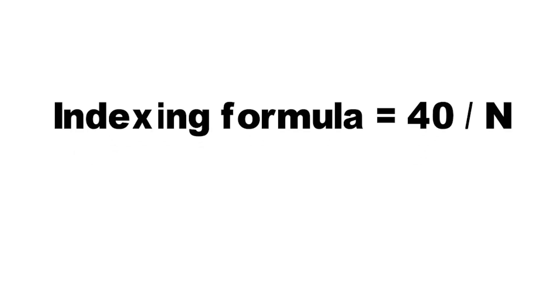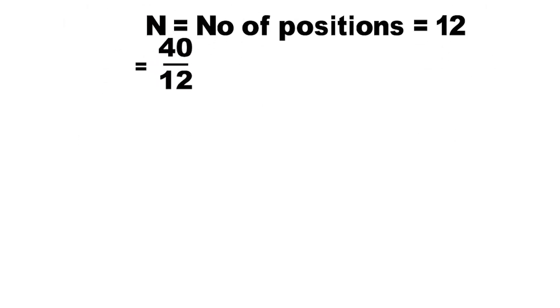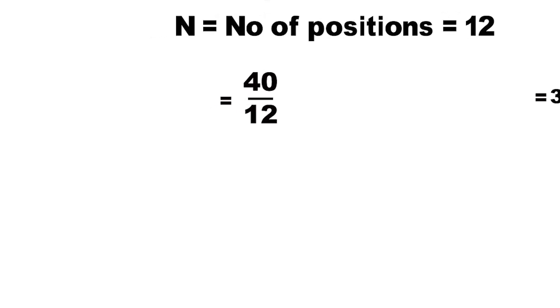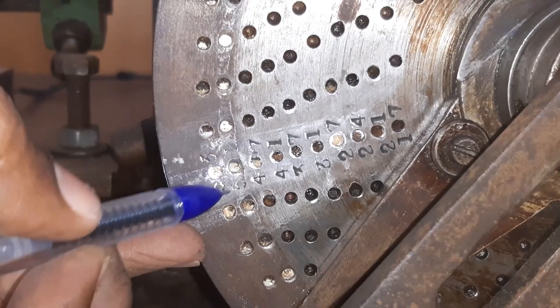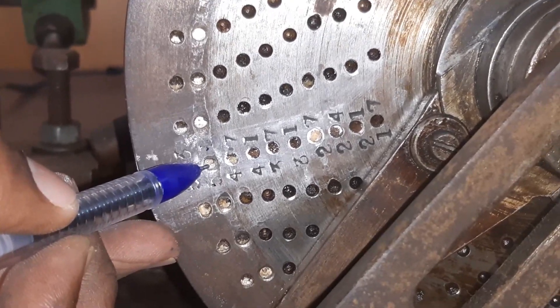The indexing formula is 40 divided by n, where n denotes the number of positions. We should take 12 positions, so 40 divided by 12. Instead of going to decimal, we have to keep it in fractional. So it will be 3 and 1/3. We only have a couple of indexing plate numbers, so let's take plate number 51.